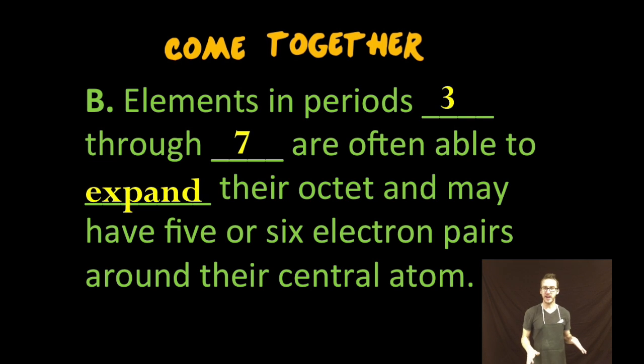And then we get to elements in periods three through seven and those are often able to expand their octets and may have five or six electron pairs around their central atom. So ten or twelve electrons. Just a spit in the face of the octet rule. I am a rule breaker.